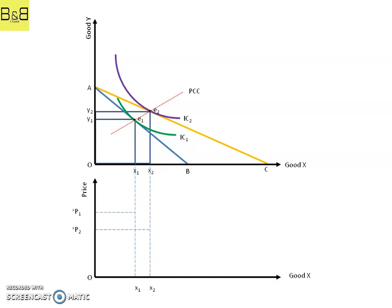When we combine these two intersecting points on the below panel of the figure as shown on the screen, we will get a demand curve, that is dx. This is the demand curve for good x.